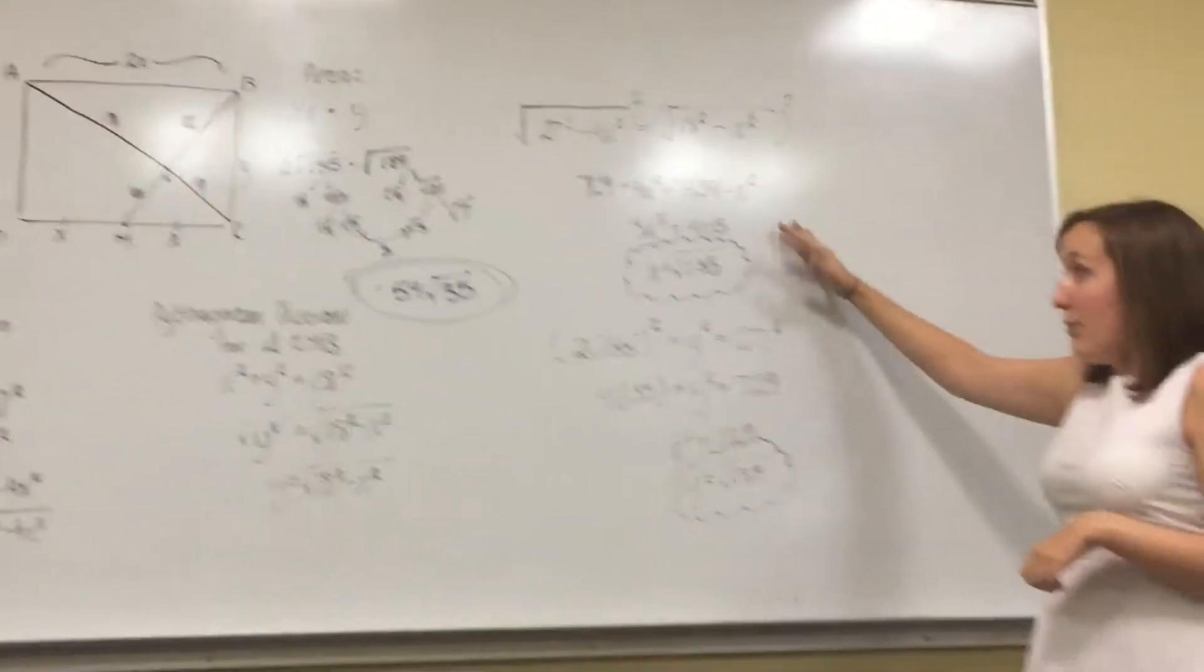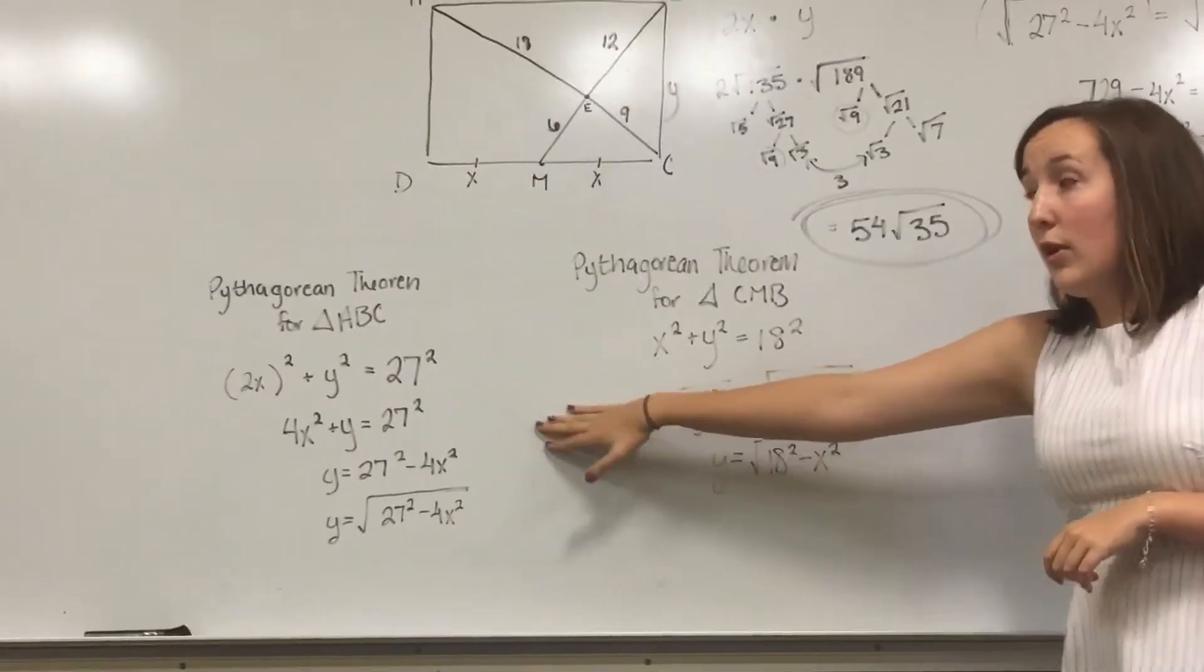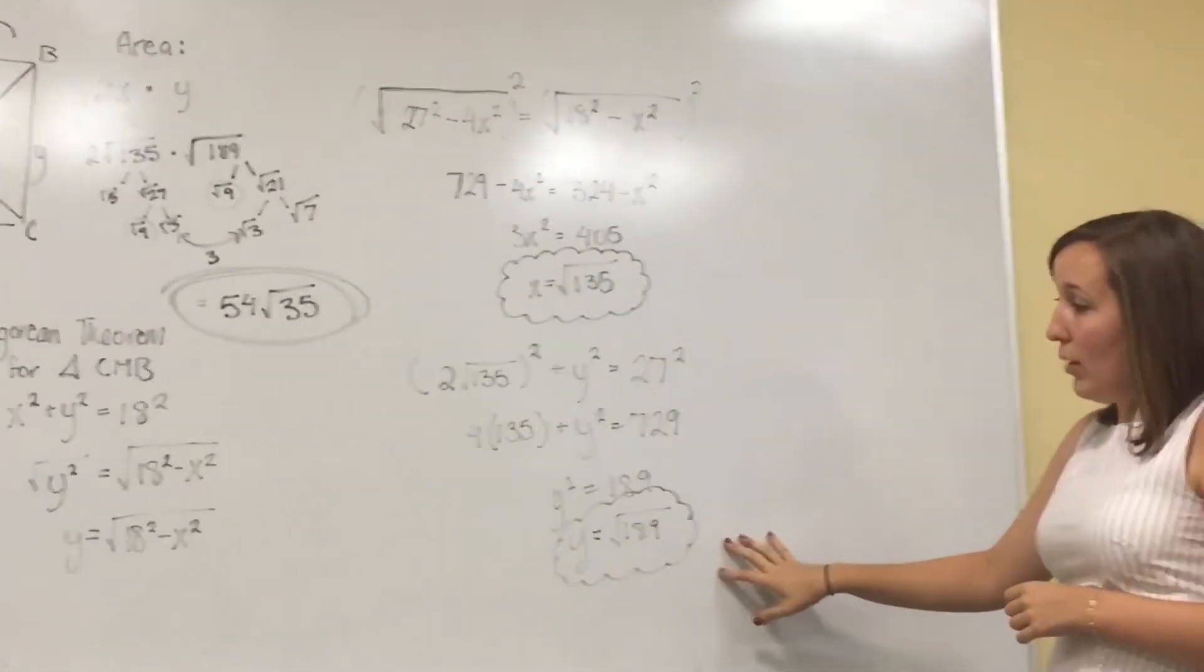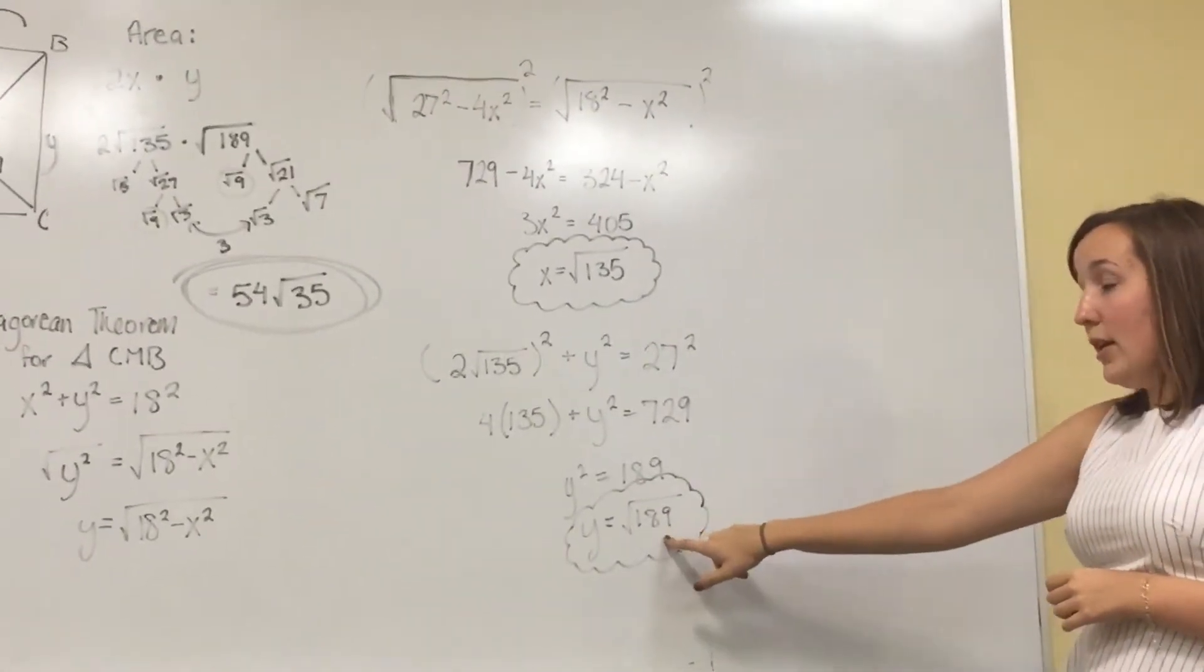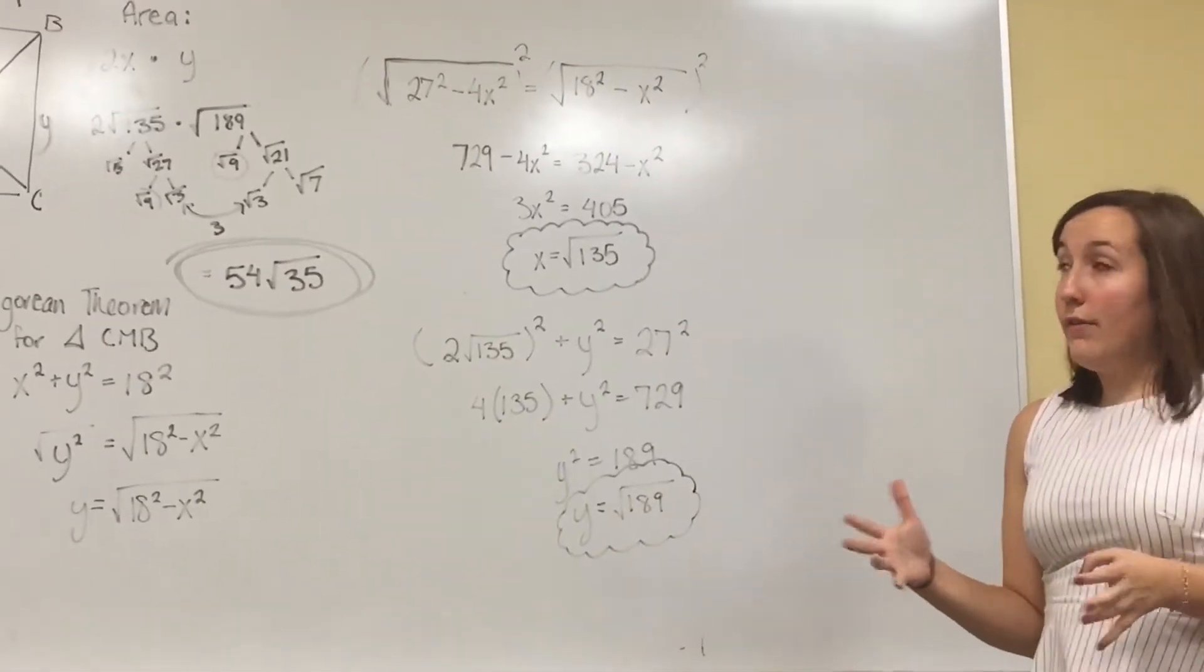And then I plug that back in to the Pythagorean theorem equation that I used for triangle ABC. So I plug the x value in, did all the work, and then came up with y equals the square root of 189 as my y value.